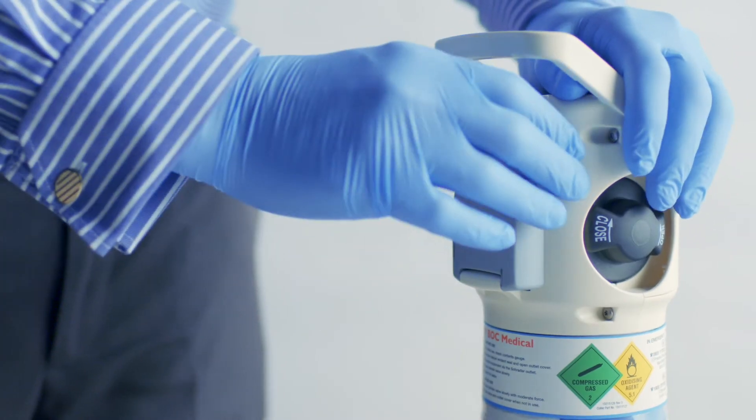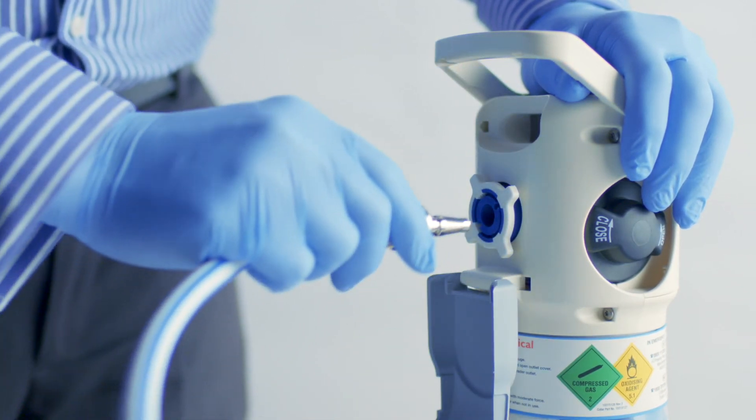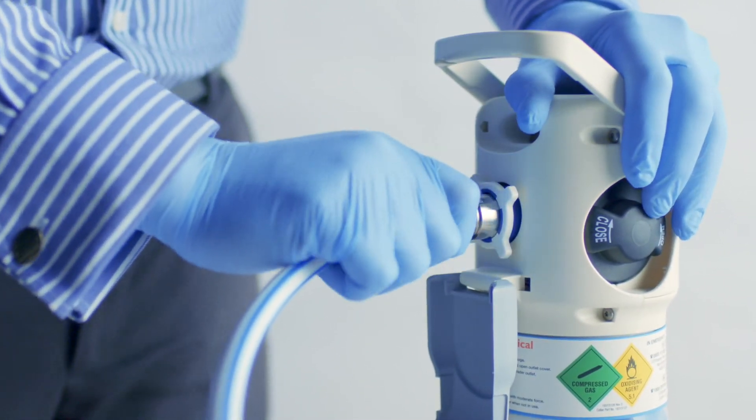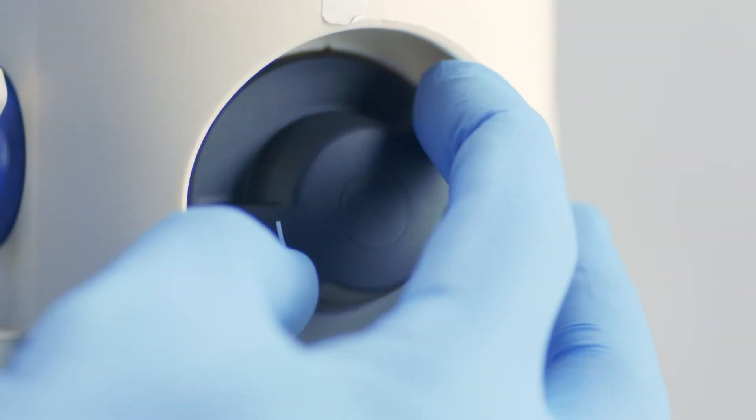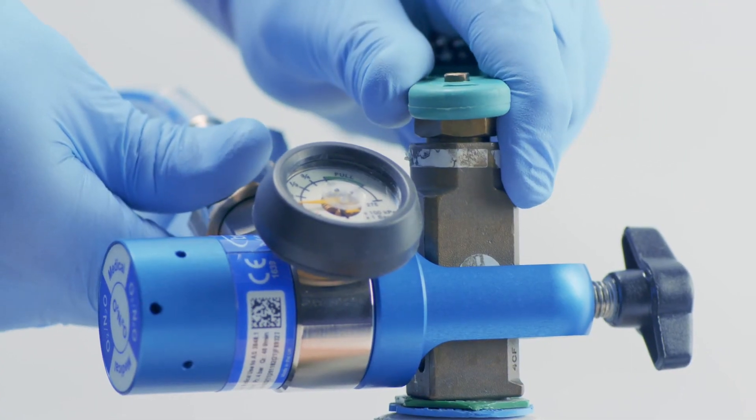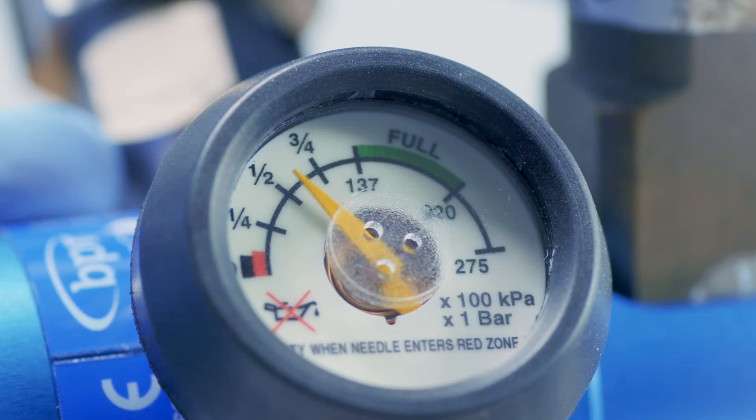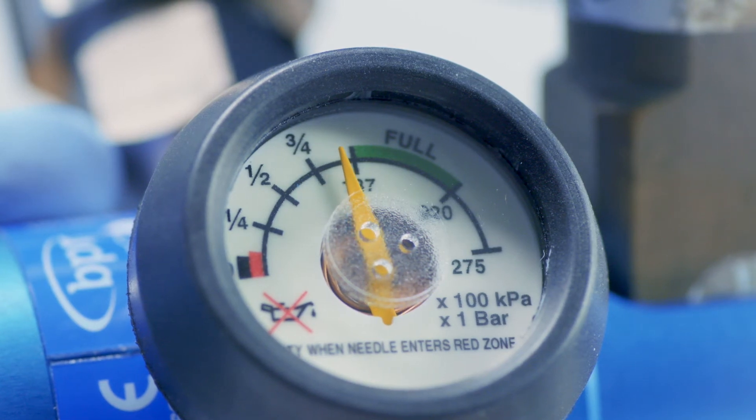Connect the demand valve probe to a cylinder or medical gas terminal unit. If using a gas cylinder, turn on the cylinder valve. Remember to monitor the cylinder contents regularly and have appropriate backup cylinders available.